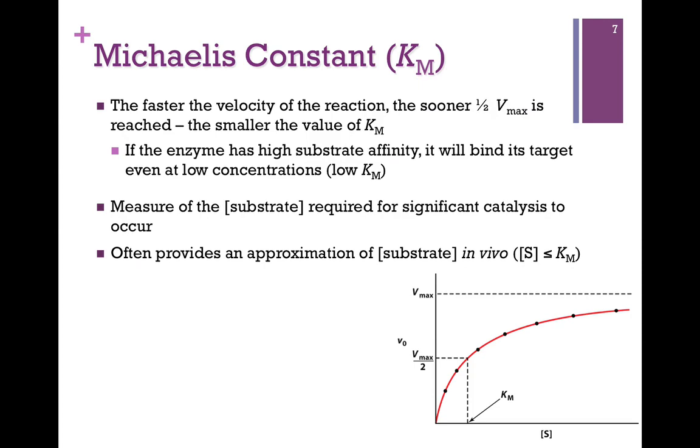Km is a measure of substrate affinity. The faster the velocity of the reaction - the higher the Vmax - the sooner that one-half Vmax is reached and the smaller the value of Km. If the enzyme has high substrate affinity it will bind its target even at low concentrations. So high substrate affinity means low Km. It's a measure of the concentration of substrate required for significant catalysis to occur. If substrate concentration drops below Km you're not going to get much product over time. It's often a pretty good approximation of the concentration of that substrate in vivo inside the cell.